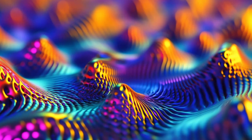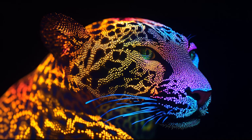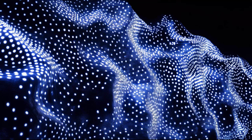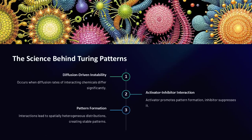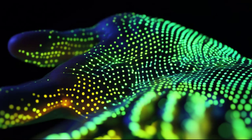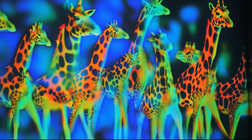Chemical signals called morphogens interact to form stable patterns that guide pigmentation. Think of reaction diffusion systems as a painter working on a canvas. Turing patterns emerge when a reaction diffusion system undergoes a process called diffusion-driven instability. This occurs when the diffusion rates of two interacting chemicals — an activator and an inhibitor — differ significantly. The activator promotes the formation of a pattern while the inhibitor suppresses it.